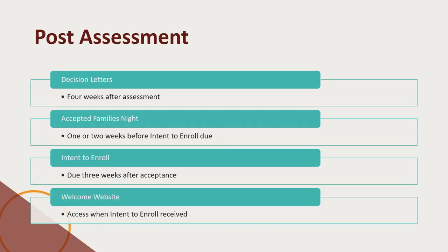Once all parts of the Academic Readiness Assessment have been completed, there will be a final review by the assessment team. Decision letters will be emailed four weeks after the close of the assessment window. The assessment team will make every effort to maintain this timetable but may need to make adjustments during higher volume periods to ensure fair and careful consideration of all applications.